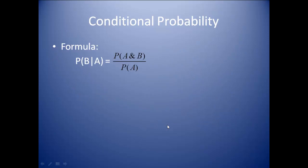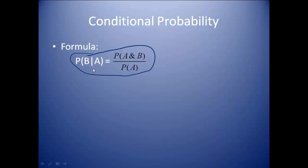We do have a formula that goes with conditional probability. We take the probability of A and B divided by the probability of A. Keep in mind that the probability of A is the condition that has already happened. Let's look at a couple of those examples — the probability of E given C: what's the probability of a king given that I have a face card?